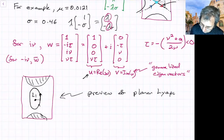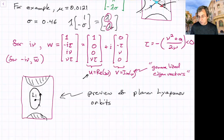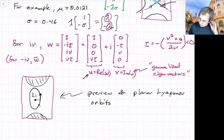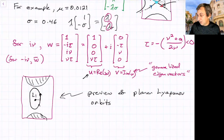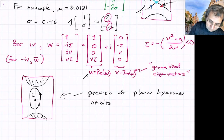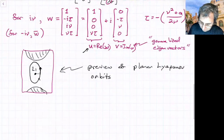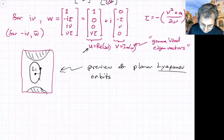As a historical note, I don't think Lyapunov actually named these orbits. Lyapunov did a lot of work on the study of dynamical systems and stability in general. I think these were just among the first periodic orbits discovered and were named in his honor. He was a Russian mathematician and dynamicist.